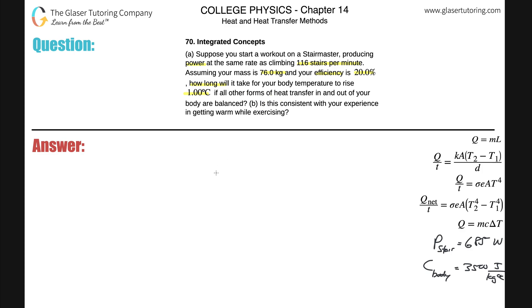First thing is they give us efficiency, and they're also telling us that we are producing power at the same rate as climbing 116 stairs per minute. So we can look that up in the textbook, and this is the power of climbing 116 stairs per minute: 685 watts.